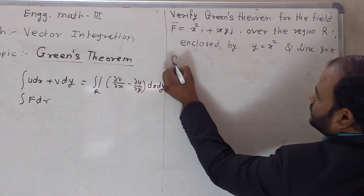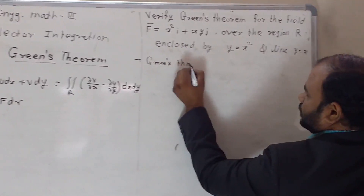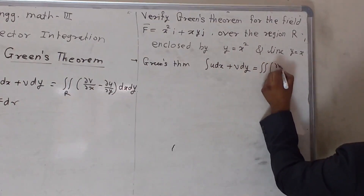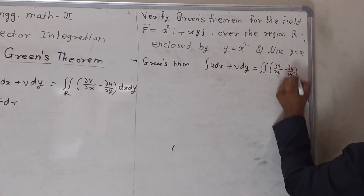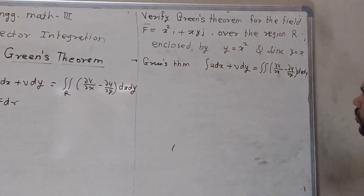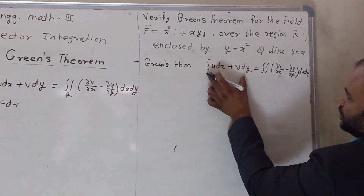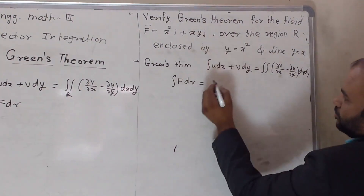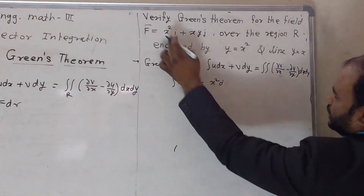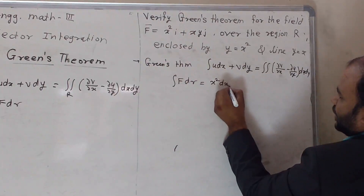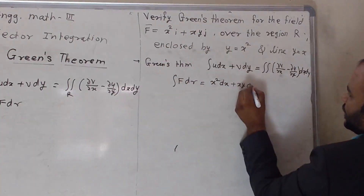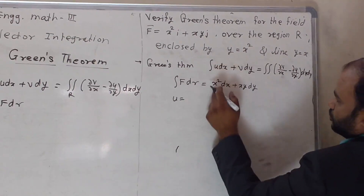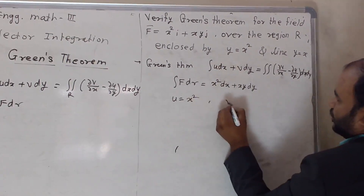Green's Theorem states: single integration of u dx plus v dy equals double integration of ∂v/∂x minus ∂u/∂y dx dy. We need to find u and v. The single integration of u dx plus v dy is nothing but ∮F·dr. So F·dr gives x² dx plus xy dy. Comparing these two terms, u = x² and v = xy.